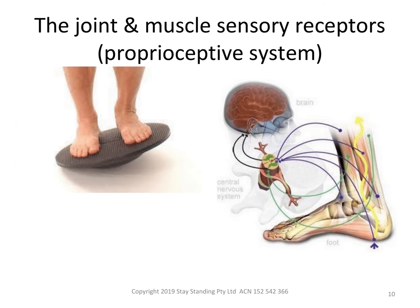The sensory receptors in the skin, muscles and joints send information to the brain about body position and movement too. The image on slide 10 shows a person practising on a wobble board. The proprioceptors from the lower limb inform the brain, and the brain controls changes in muscle length and tension to enable the person to stay standing.